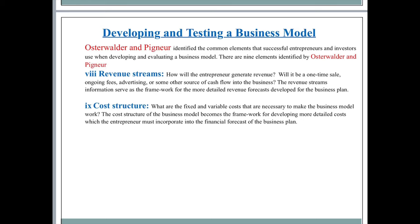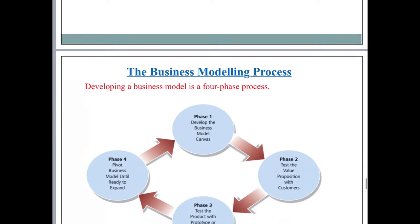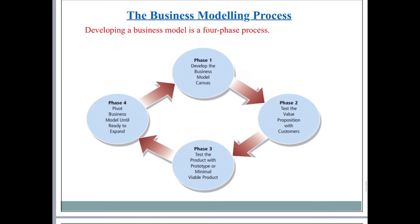Now let's talk about the business model process — it's a four-phase process. Phase one: develop the business model canvas, meaning you make a picture of your business model, and then you test the value proposition with customers. You find out from customers what their review is about the product you have made or the service you are giving. After testing the value proposition with customers, you test the product with a prototype or minimal viable product — a small production is done, samples are made, and these samples are used with potential customers so they give you their feedback.